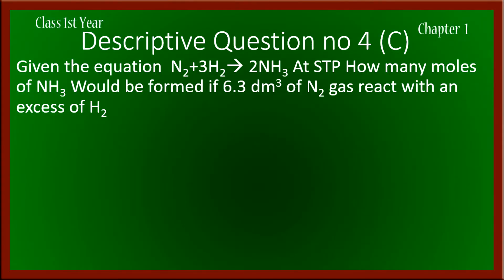Descriptive question number 4, part C: Given the equation nitrogen reacts with hydrogen to produce ammonia at STP, how many moles of ammonia would be formed if 6.3 dm³ of nitrogen gas reacts with an excess of hydrogen?